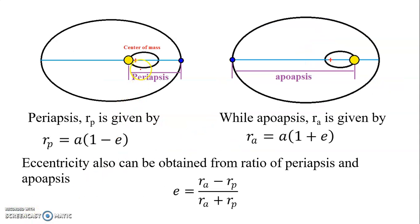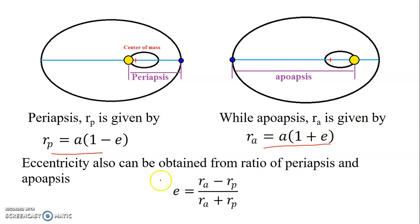The distance at periapsis — the shortest distance from the object to the focus — is given by this equation. The distance at apoapsis — the farthest location of the object from the focus — is given by this equation. The eccentricity can also be obtained from the ratio of periapsis and apoapsis distances.